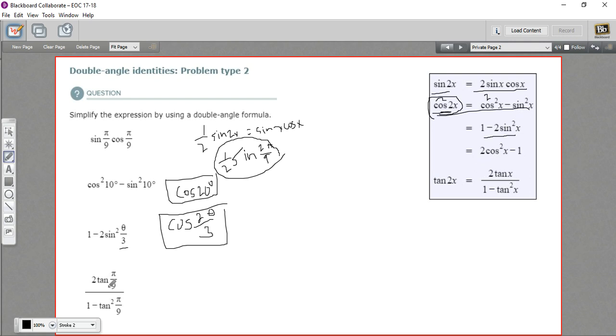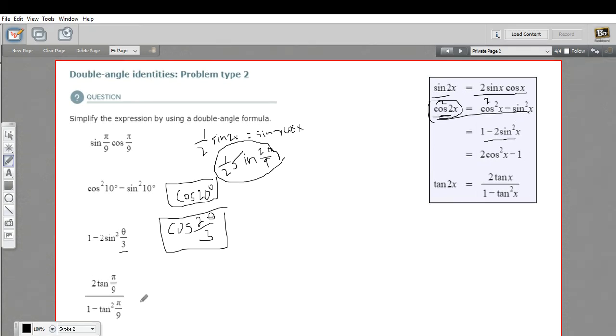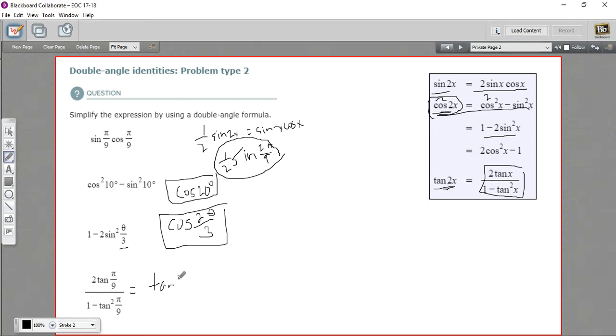Last one. We've got a tangent here. 2 times the tangent of pi over 9 minus 1 minus tangent squared pi over 9. That's exactly what we have here. So this is the tangent of 2x. Our x is the pi over 9. So this is just tangent of 2 pi over 9.